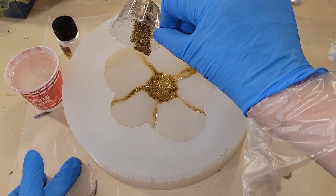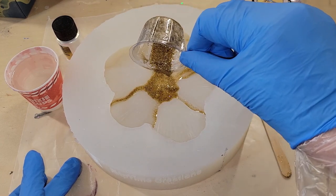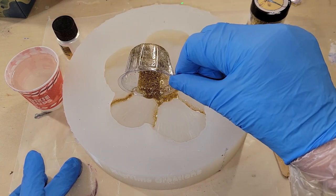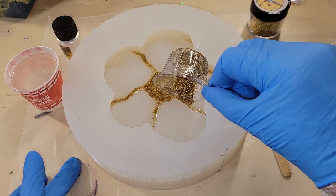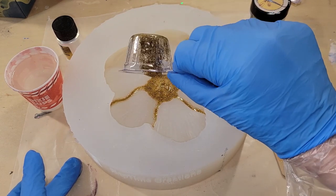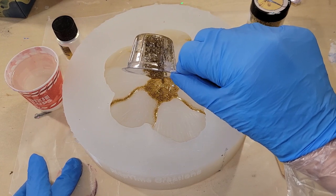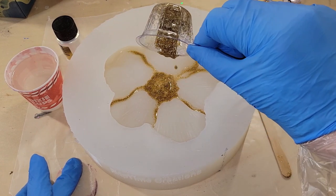The first thing I like to do on these is go in with a little bit of this gold glass glitter from Laura's Art Corner. It's a heavy glitter so it doesn't float, it really stays put nicely where you place it.